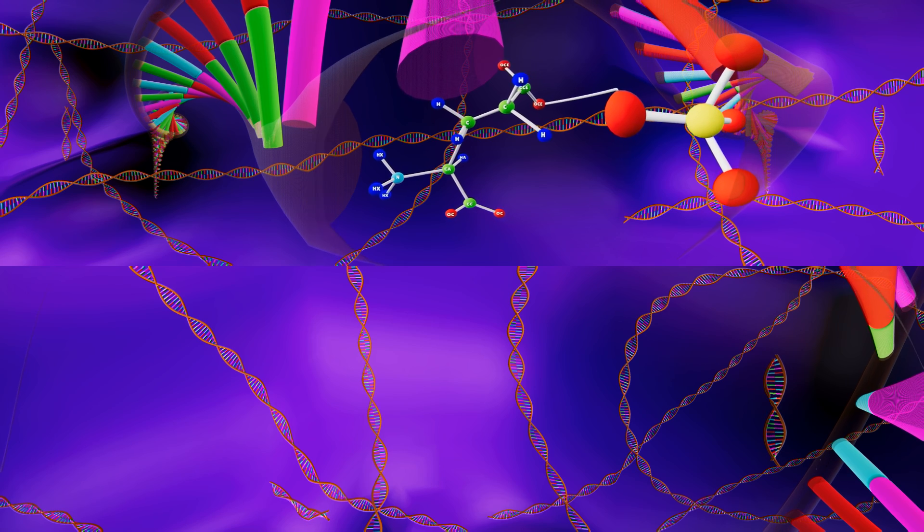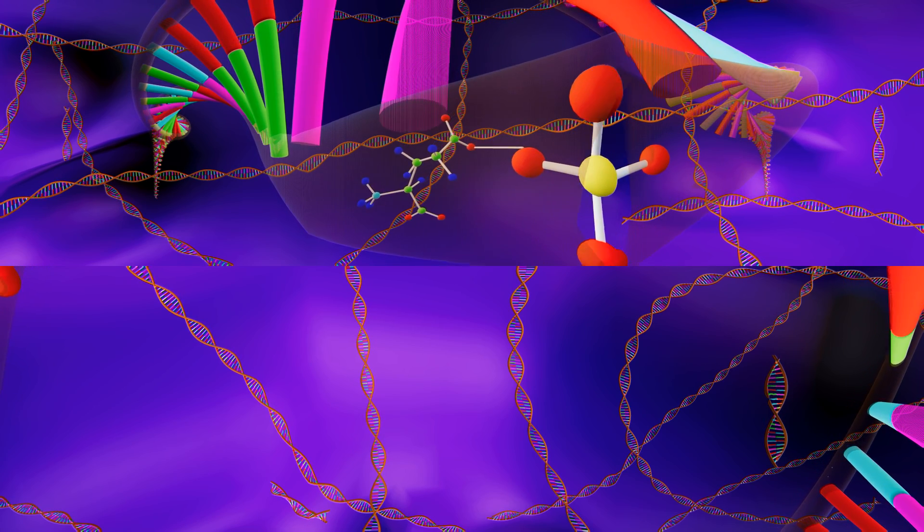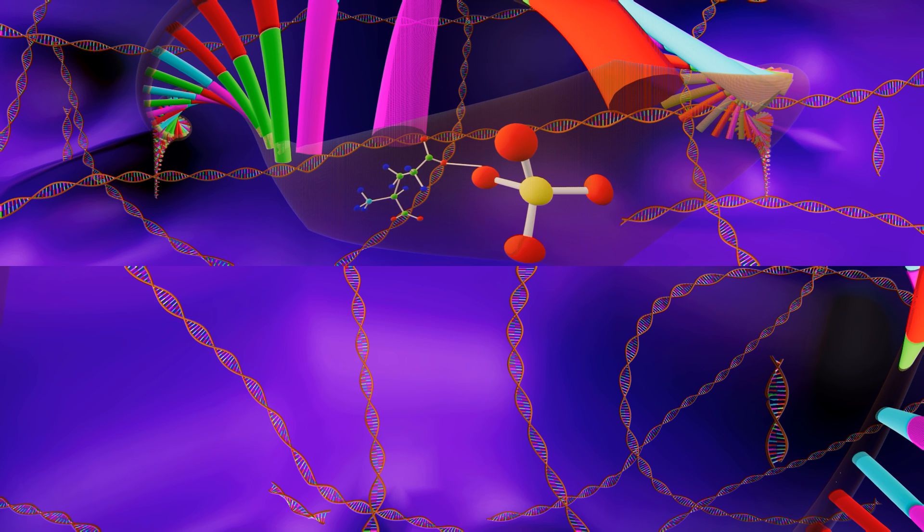A phosphate group is a functional group, a compound that gives a carbon chain or ring a particular function, made up of phosphorus attached to four oxygen molecules.